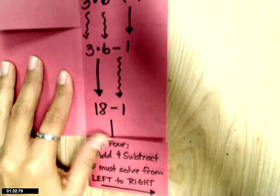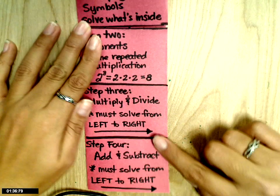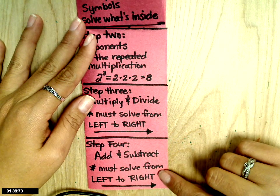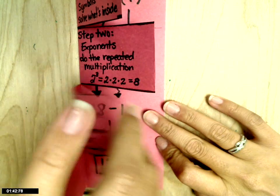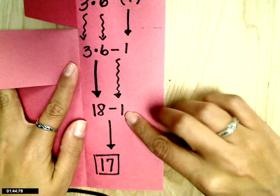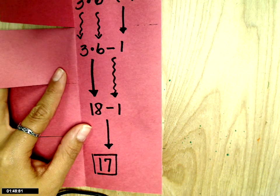Next step is step 4, add and subtract. Again, just like multiply and divide, we move from left to right. The only step we have is to subtract, so 18 minus 1 is 17, and you would box your answer.